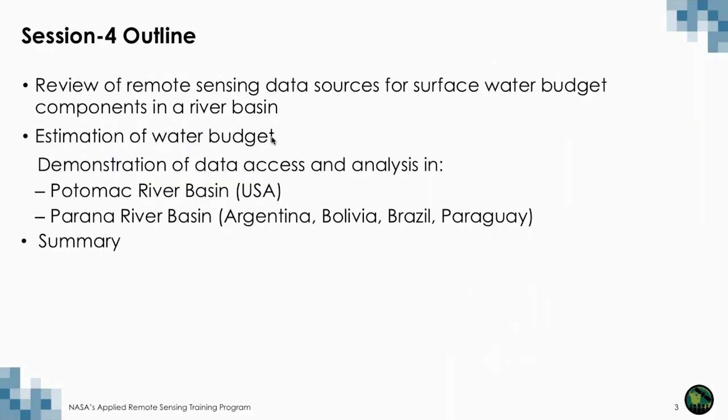The overall outline will be a review of all the data sources we went through in the last three weeks. Then we will have a live demo showing how to access data and how to analyze this data using GIS or open source QGIS. We're going to focus on two river basins: Potomac River Basin in USA and Parana River Basin, which is a transboundary river crossing Argentina, Bolivia, Brazil and Paraguay. Then we will summarize today's session and provide take-home messages so you can use all these data in your own river basin.